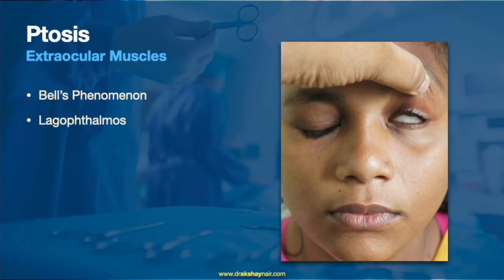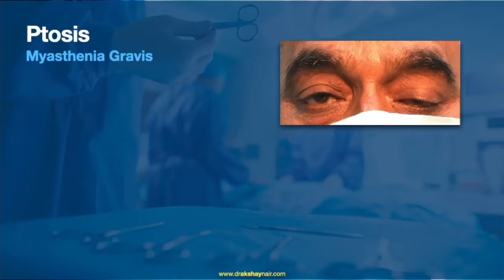Extra-ocular muscle assessment is also important. Bell's phenomenon is checked by asking the patient to forcefully close their eyes, then lifting the eyelid to observe the cornea position — it typically rolls upwards and outwards in a normal response. Eyelid closure and the presence of lagophthalmos should also be checked, as patients with lagophthalmos preoperatively are at risk of exposure keratopathy.